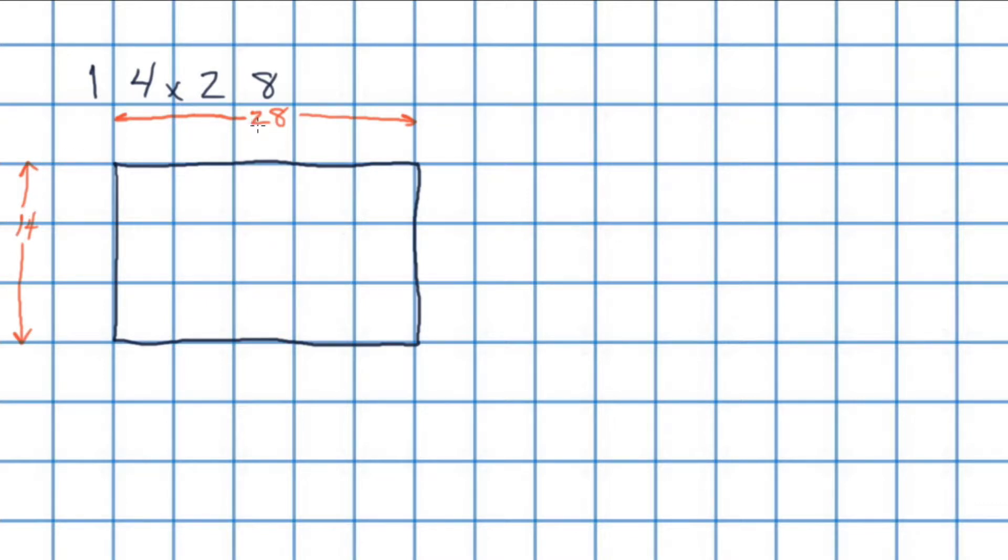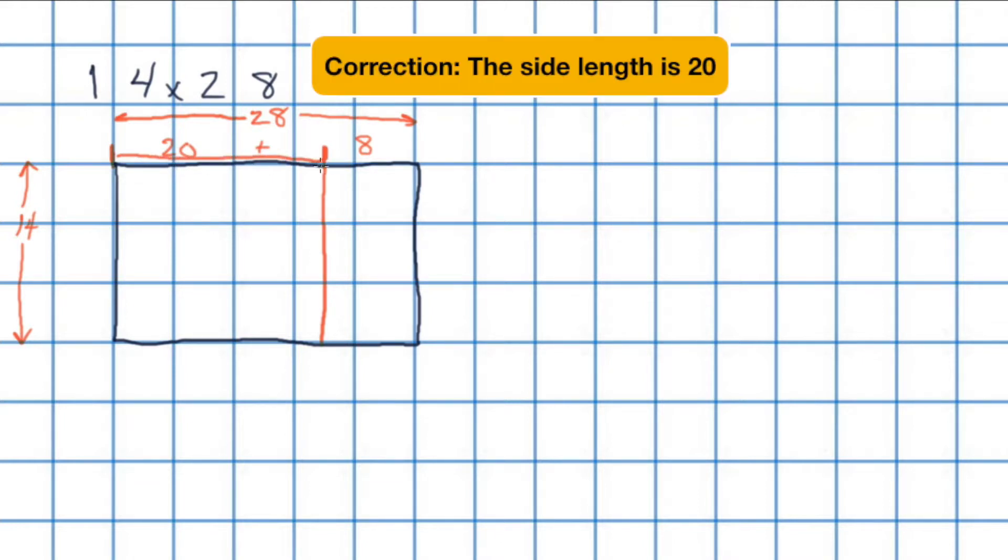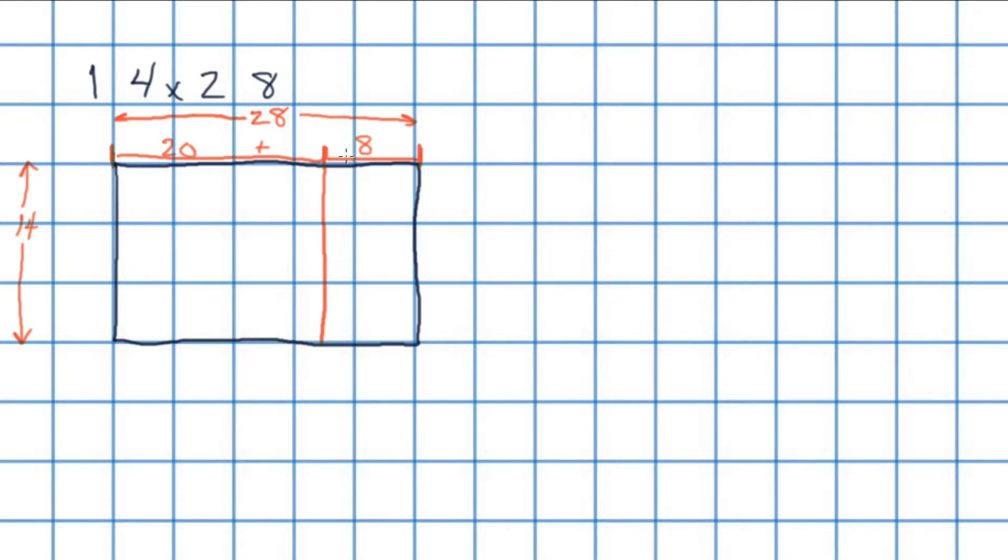And as we did earlier, we can think of 28 as 20 plus 8. And I'm going to draw a line that goes down through our rectangle like this to divide our rectangle into two smaller rectangles. One that has a side length going from here all the way across to here. That side length is 20. And this side length of this smaller rectangle here is now 8. We'll do the same this time for 14. 14 is the same as 10 plus 4. And we'll draw a line going across here dividing or splitting our rectangle again into two more. So now we have four smaller rectangles. This side length is now 10 going from here to here. And this side length is 4 going from here to here.